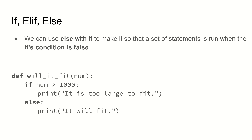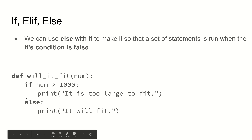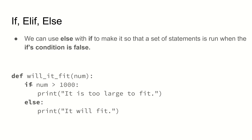There are other structures we can add to our if statements. There's the else portion — that is what happens when the condition stated is false. If the num given was 2,000, 2,000 is greater than 1,000, so the if statement will print 'it is too large to fit.' It will then skip past the else portion. It will only do one of the two. It's an either-or situation — it's not going to do both. That makes sense because num cannot be both greater than 1,000 and not greater than 1,000.